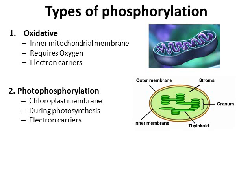Photosynthesis also produces ATP in a similar process, but the driving force is light. When ATP is produced by light in plants, it is called photophosphorylation. This occurs in the chloroplast and also uses an electron transport chain — something we'll discuss in detail later on.